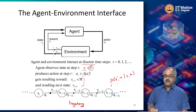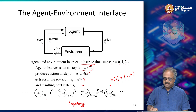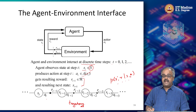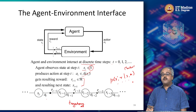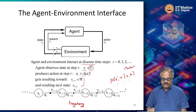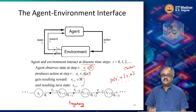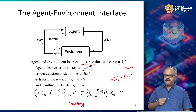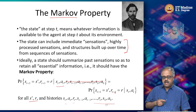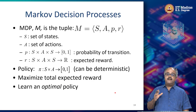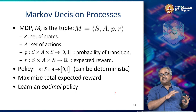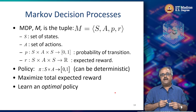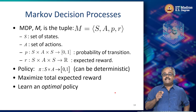The probability distribution P(S', R | S, A) already assumes the Markov property holds because we only use S and A, not anything that came before. So we are going to assume the Markov property holds, and using this, I am going to define the agent-environment interface, leading up to the whole idea of a Markov decision process.